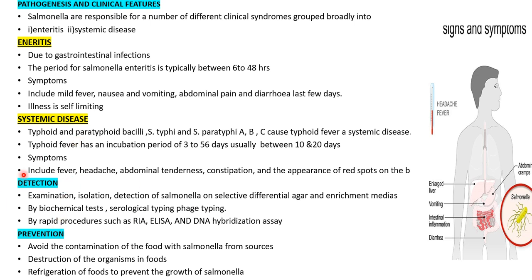Symptoms of typhoid fever include fever, severe headache, abdominal tenderness, constipation — inability to defecate properly — and appearance of red spots on the body. These are the major symptoms used to identify this systemic disease.